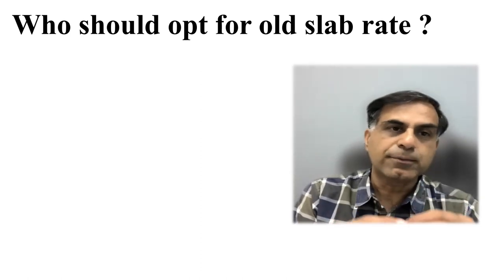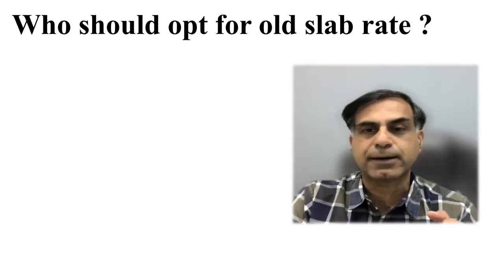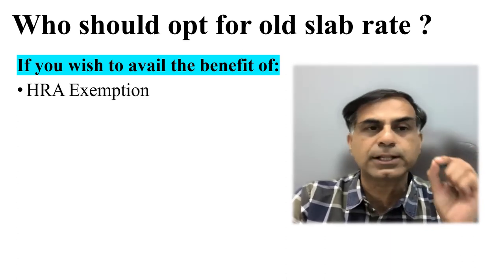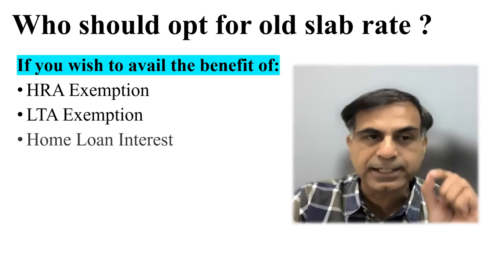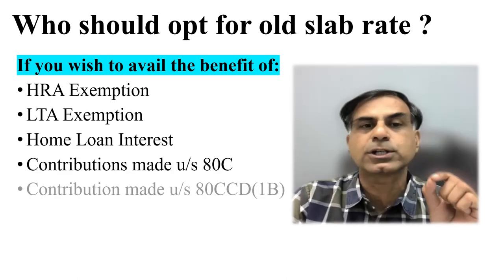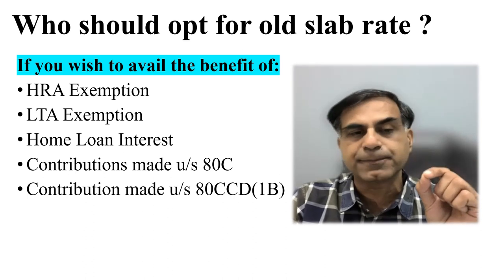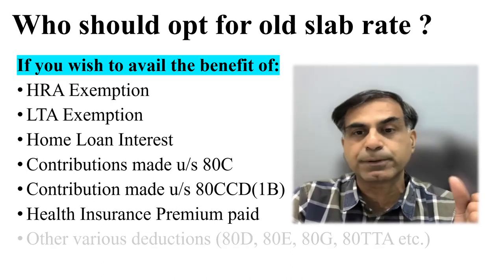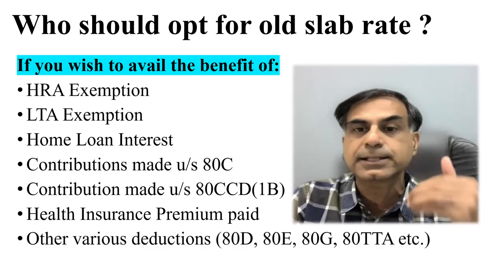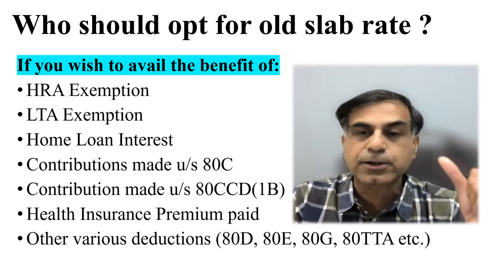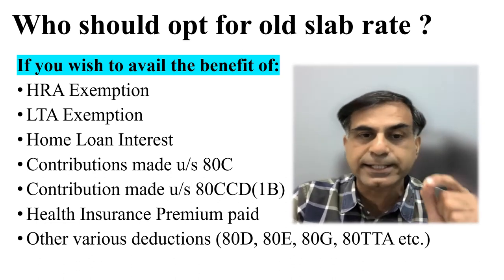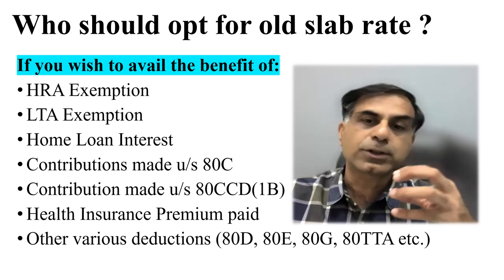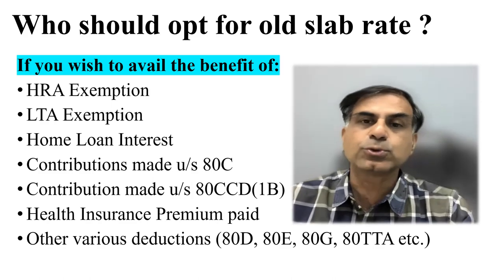So who should opt for the old slab rate? My answer would be: an assessee who wishes to avail the benefit of HRA exemption, LTA exemption, home loan interest deduction, contributions under Section 80C, contributions under Section 80CCD(1B) that is NPS of 50,000, health insurance premium under 80D, medical expenses incurred on parents, and other deductions like 80D, 80E, 80G, 80TTA — it is better to go for the old slab rate.